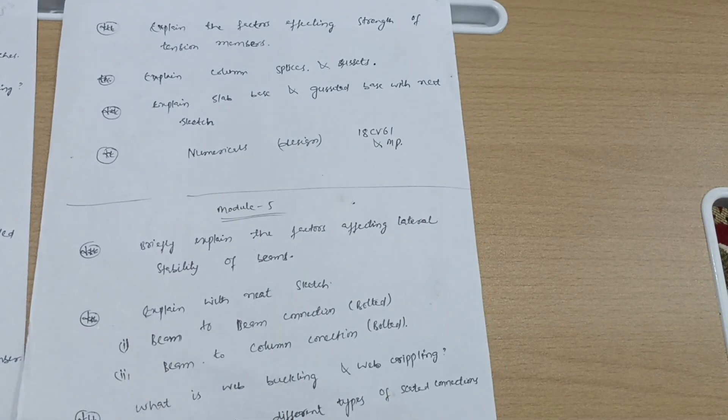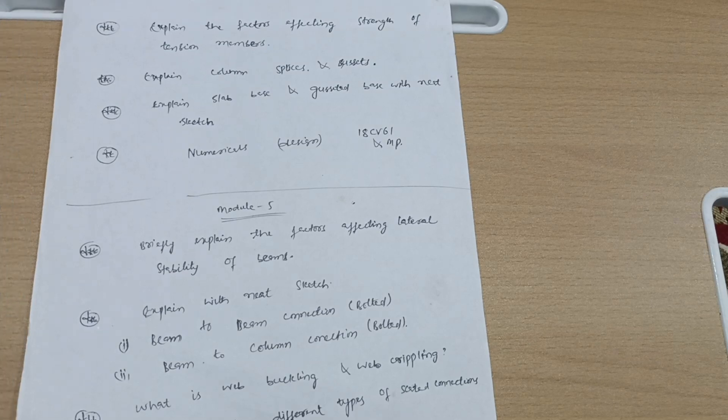You can go through only one chapter also where there is design problems of 20 marks if you are convenient with the numerical parts. So better to go through 20 marks problems which are most important ones as far as previous questions are concerned and model question paper.